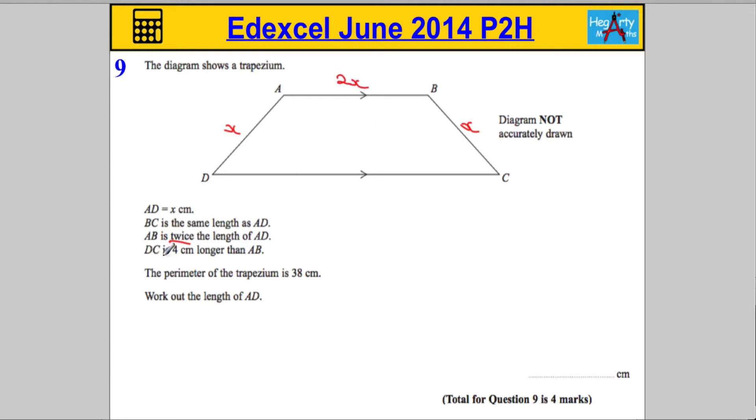And then finally we're told that DC is 4cm longer than AB, so this side here, DC, has got to be the 2X that this is, up here, but also add 4cm on, or add 4 onto it.